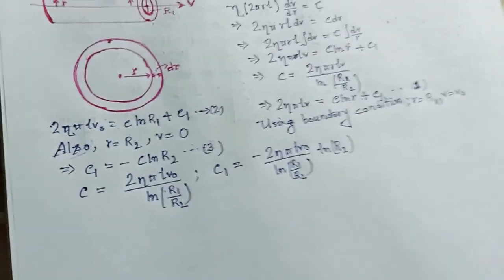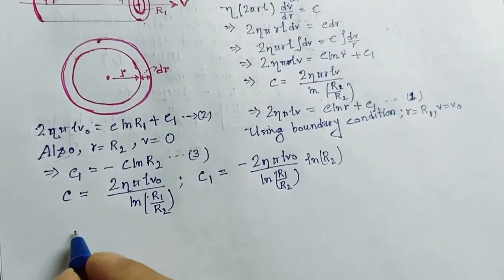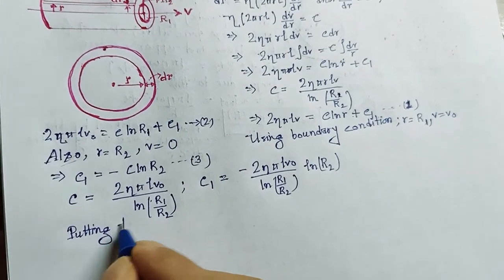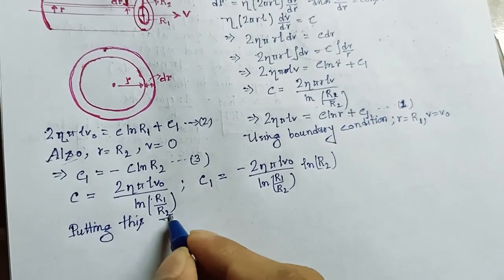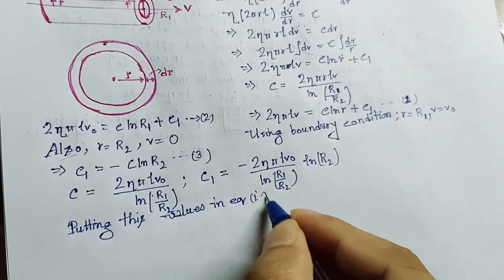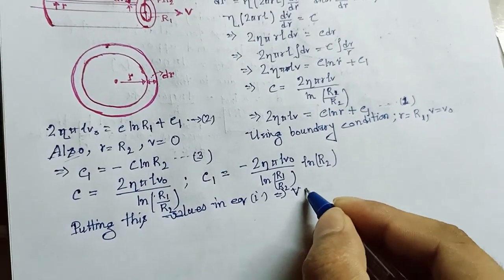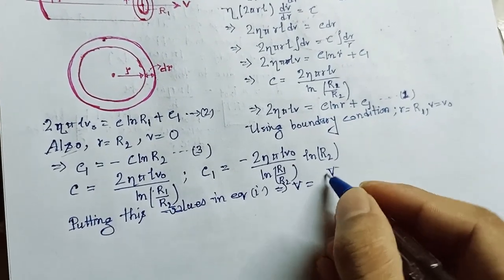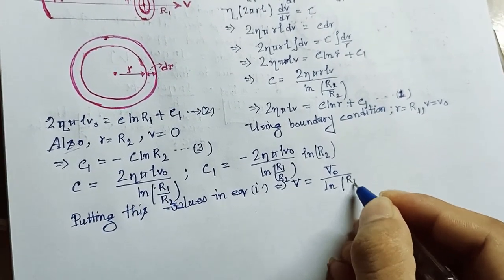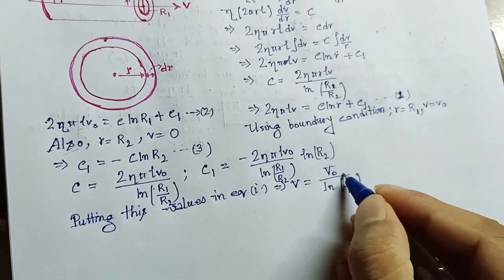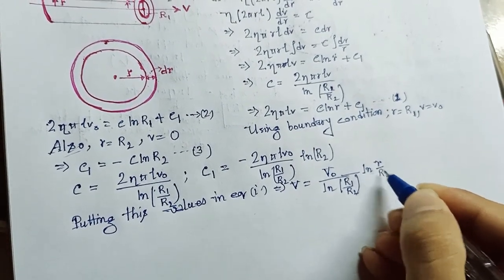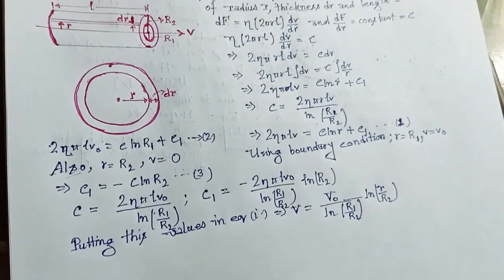Putting these values in equation number 1 will give v equal to v0 divided by ln r1 divided by r2 into ln r2 divided by r. This is our required expression for finding the velocity.